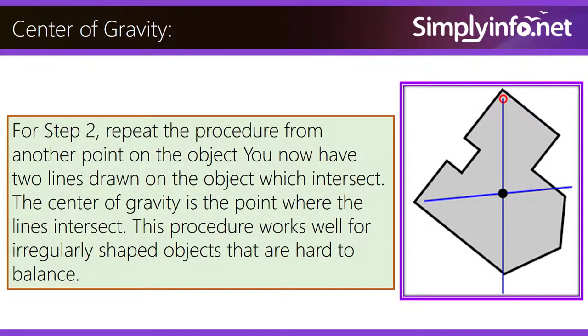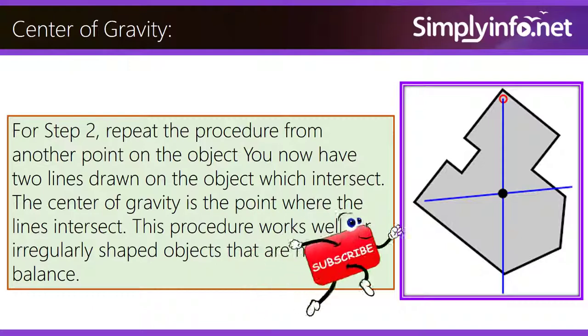Step two: repeat the procedure from another point on the object. You now have two lines drawn on the object which intersect. The center of gravity is the point where the lines intersect.